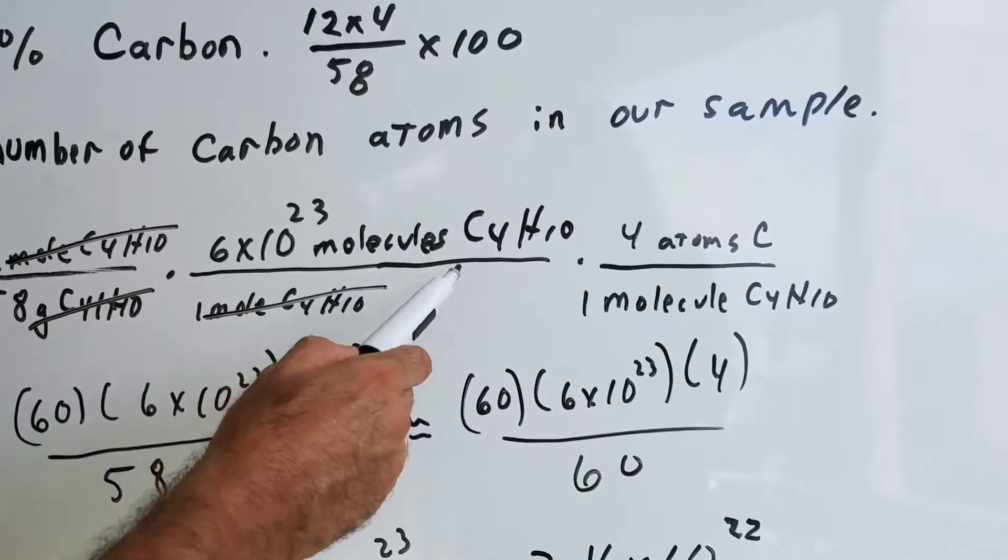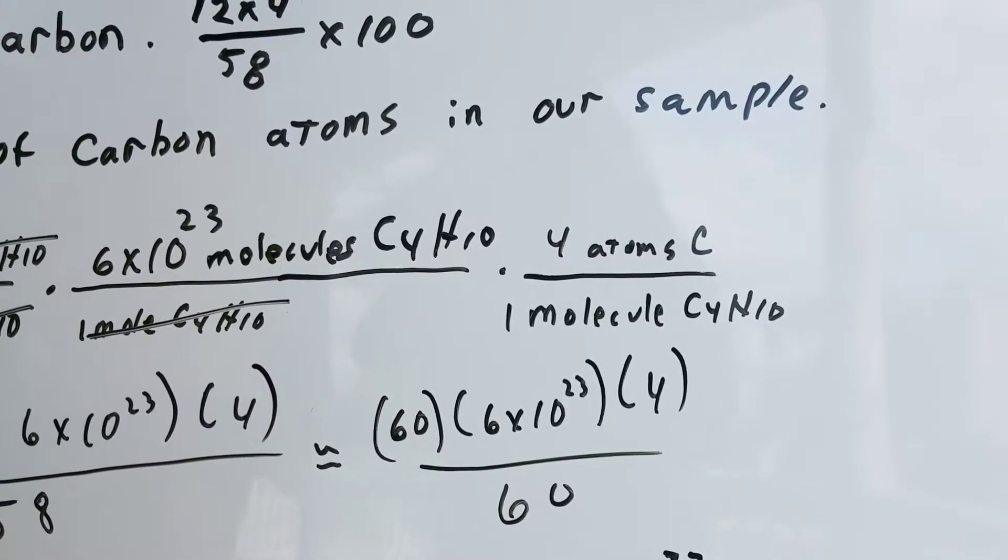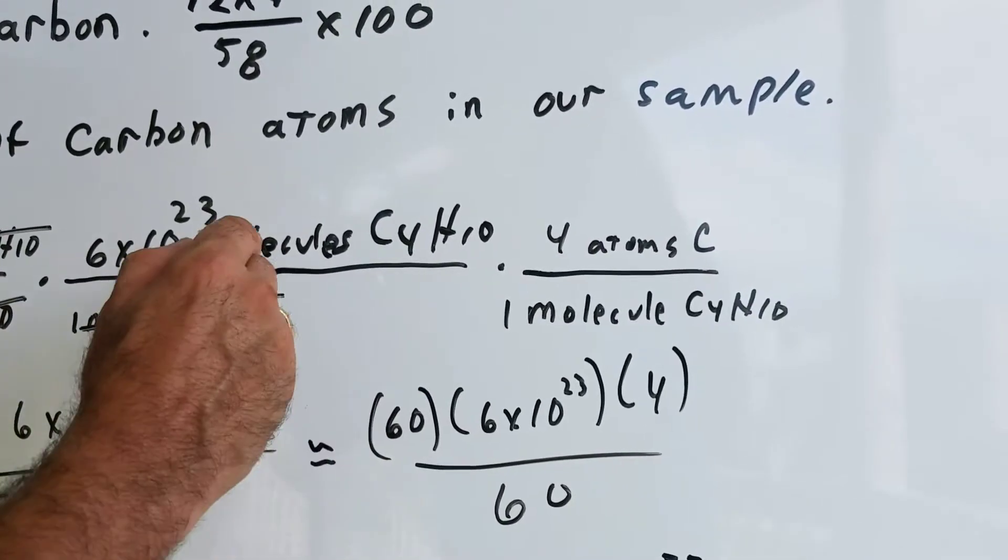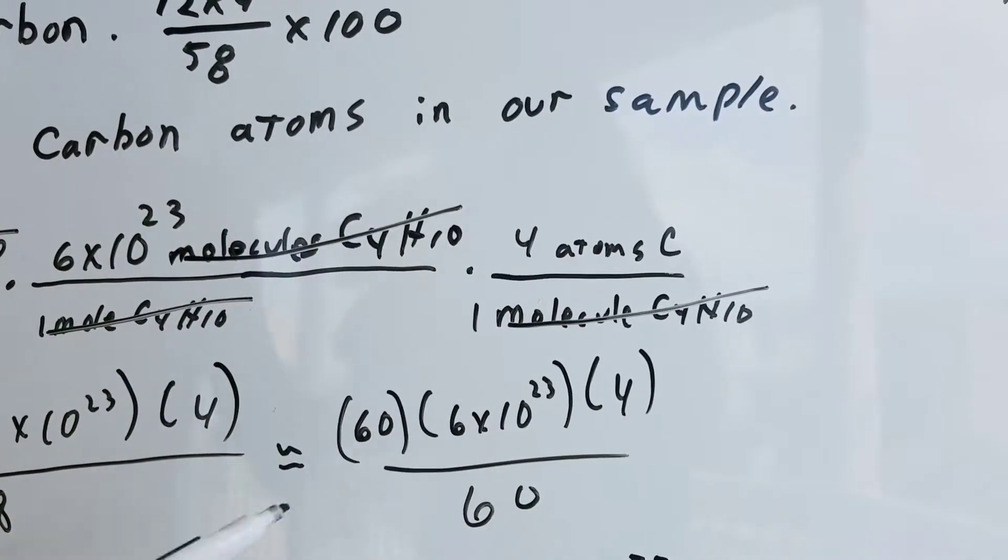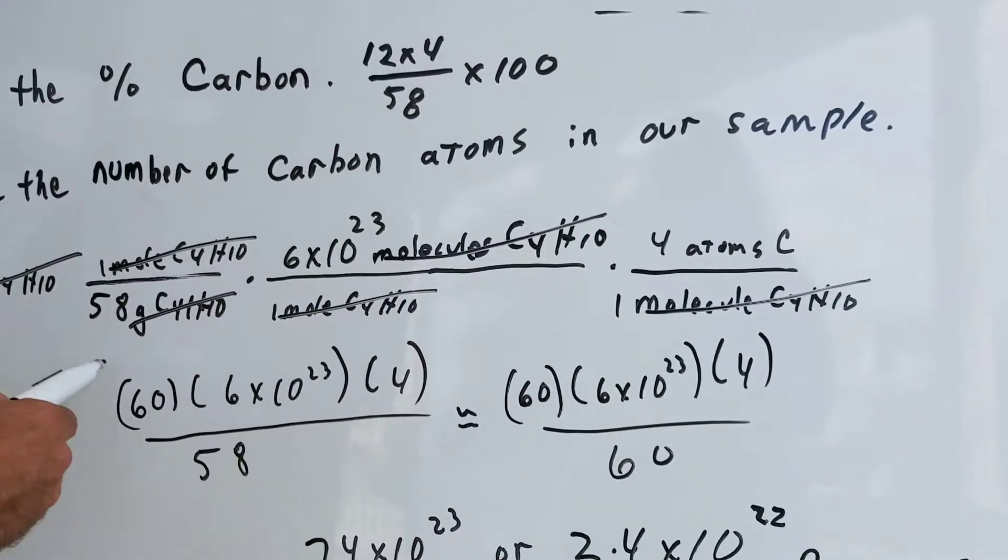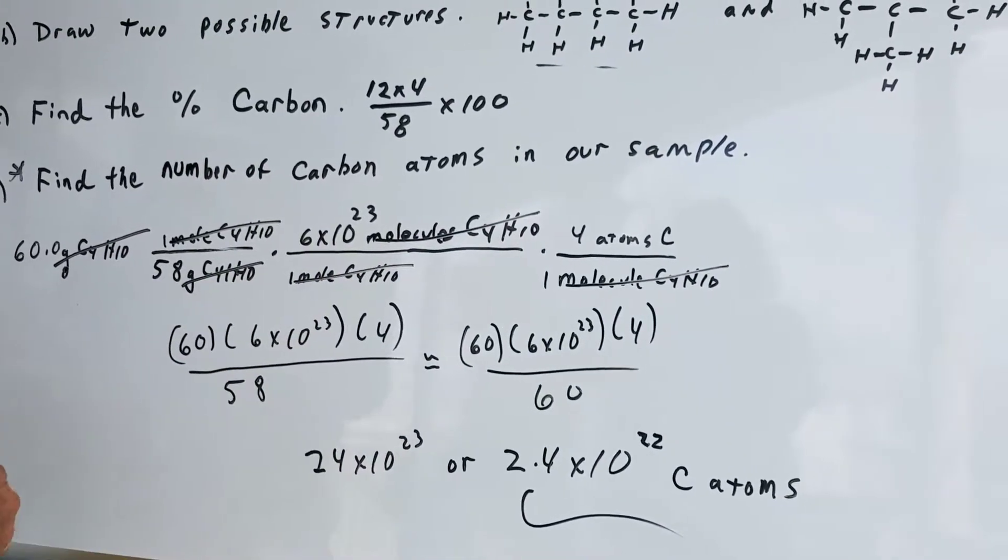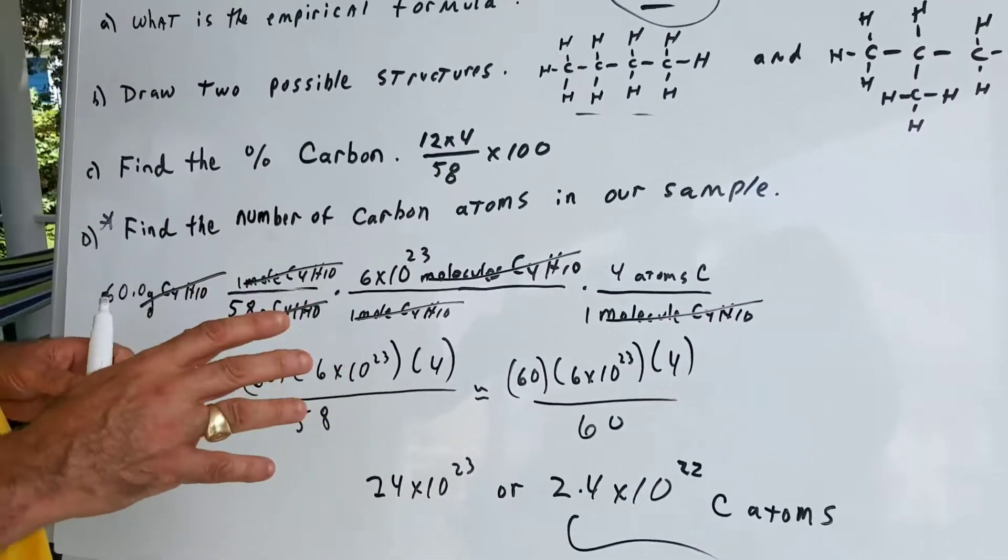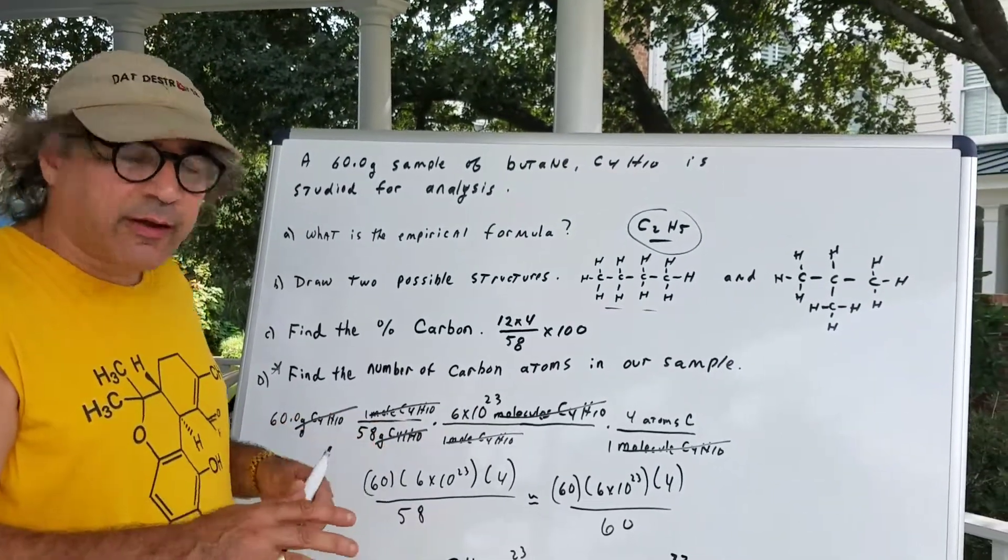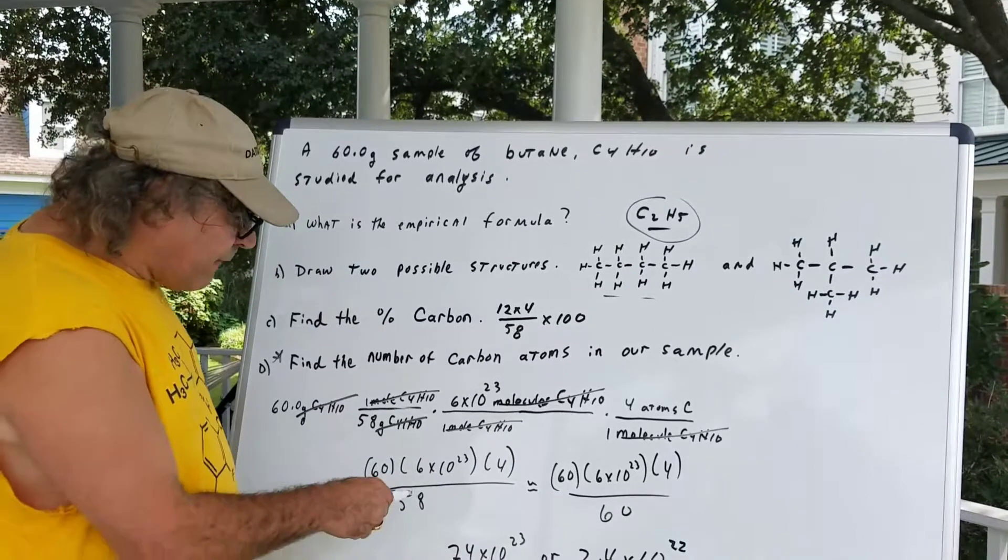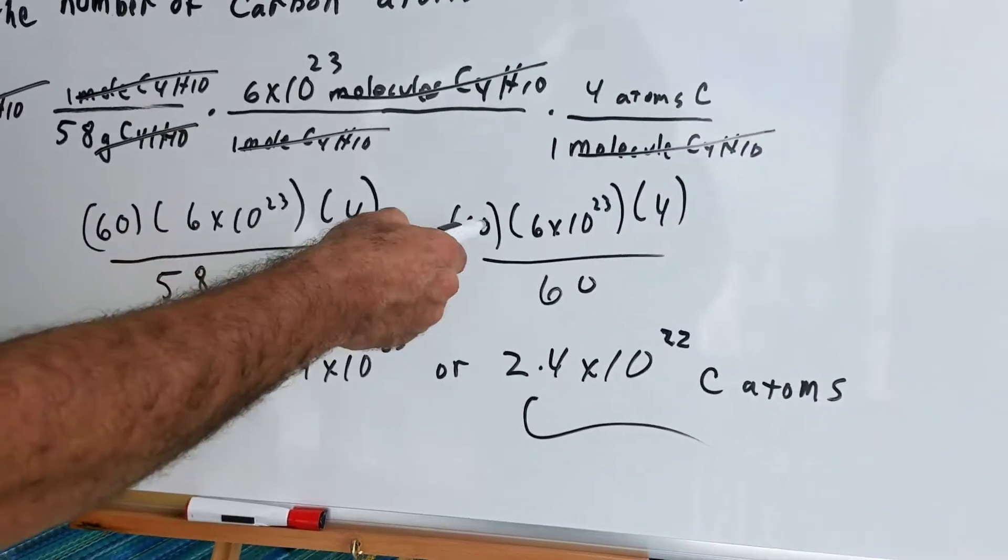Finally, I want atoms of carbon in one molecule of C4H10. I hope you can see there are four atoms of carbon, and that makes the molecules go out. So we're left with atoms of carbon. So it's going to be 60 times 6 to the 23rd times 4 over 58. Now, the DAT exam is an exam where many times you have to do some very quick simplification.